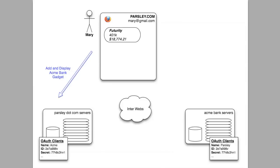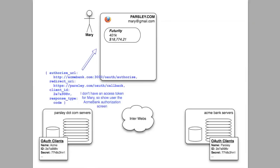To start, Mary clicks the Add Acme Bank gadget button at her Parsley dashboard. The browser sends a request to the Parsley server asking for this gadget and for its data. The server, however, can't find an Acme Bank access token for Mary, so it's not able to immediately present the gadget. Instead, it sends along to her browser the data needed to begin the token granting process.